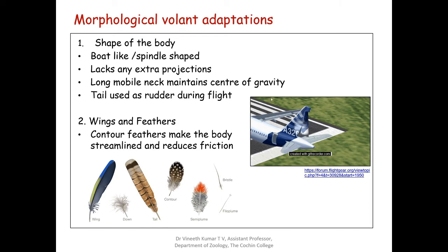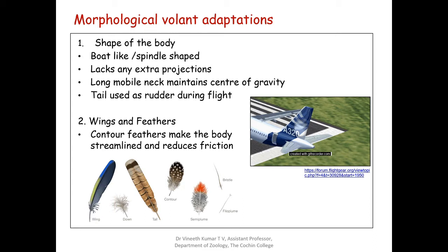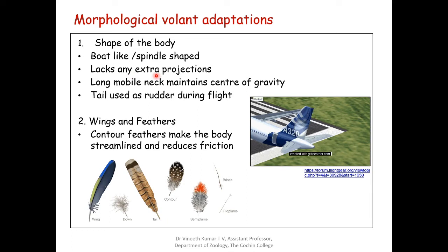The first morphological adaptation of birds is the shape of the body. As discussed in the salient features, the shape of their body is boat-like or spindle-shaped. They have a spindle-shaped body and it lacks any extra projections. These two features — the spindle-shaped boat-like structure and the lack of any extra projections — aid in flight, as the lack of extra projections helps in reducing friction during flight.